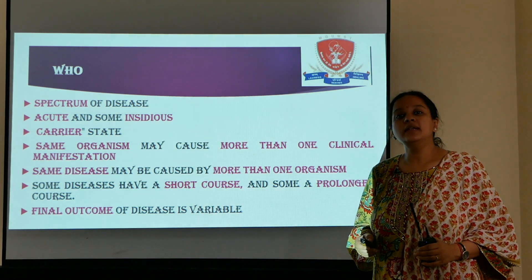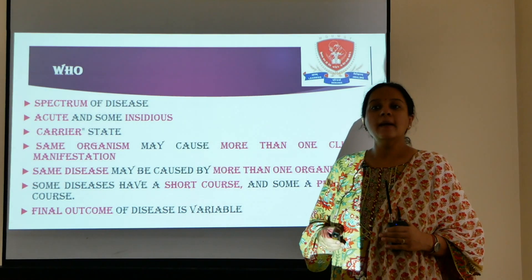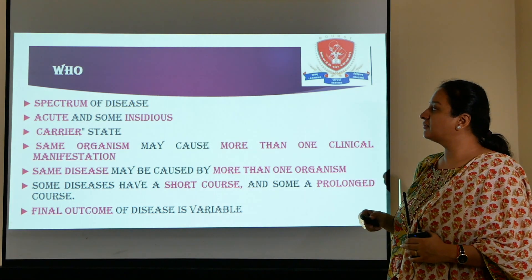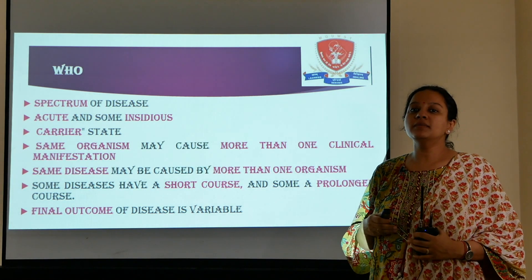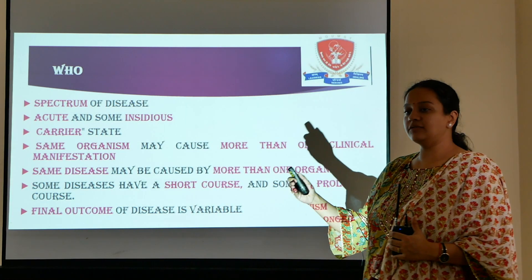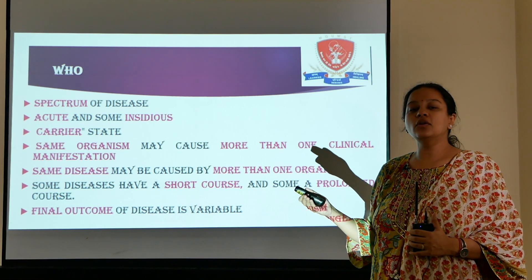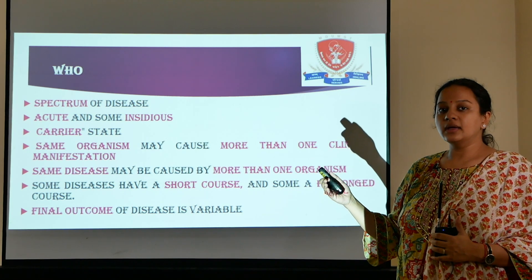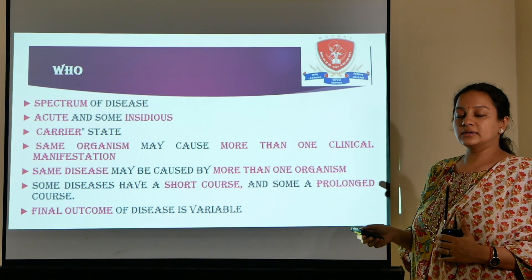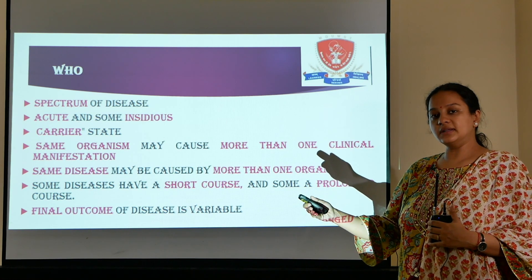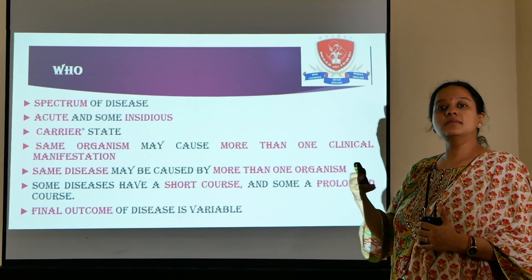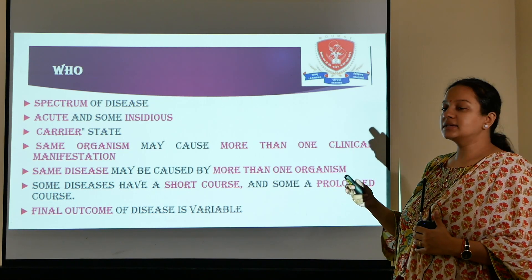WHO did not formally define disease, but there are many criteria that define it. Disease has a spectrum: on one end are inapparent cases that cannot be identified; on the other end are fatal cases. In between lie mild, moderate, and severe cases.